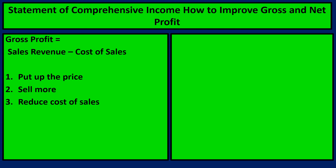Finally, we have to reduce the cost of sales, perhaps to make the things out of lower quality items or just to try and find a supplier who is a bit cheaper. That sounds like a good idea, but if your customers perceive your product to be lower quality, they may not want to pay the price. So there are always good points and bad points for any of those three. But if you have a question which says how to improve gross profit, have a look at those and pick one of them.